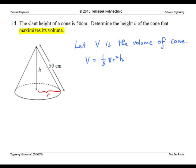Now, there are two variables, r and h. So, we need to reduce it to one variable, either all in r or all in h. To do this, we need a relation between r and h. From this diagram, can you see the right angle triangle? Therefore, we know that r squared plus h squared equals the hypotenuse, which is 50 squared.